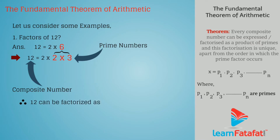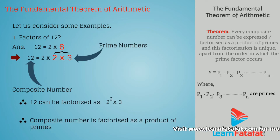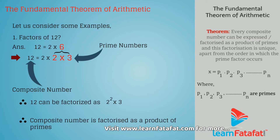Therefore, 12 can be factorized as 2 squared into 3. Hence, we can say that a composite number is factorized as a product of primes.